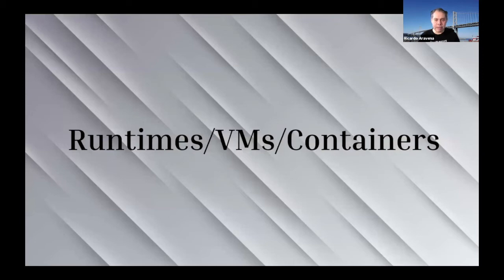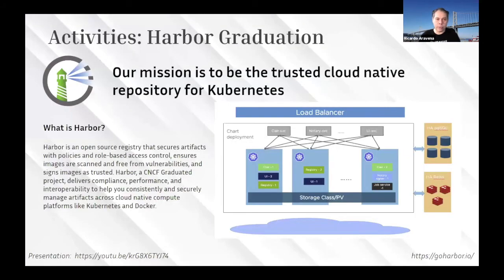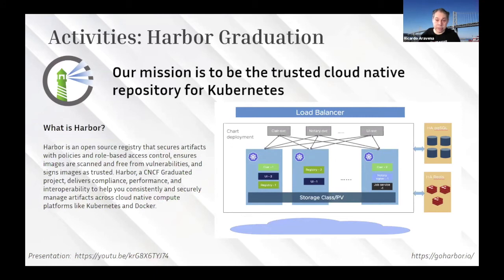In the runtime, VMs, and container space, there's Harbor, which graduated a few months ago. It's a container image registry — but not a regular single-process container registry. It's a multi-fault-tolerant container registry that allows you to store metadata in a chain system with high availability. It supports a caching system with Redis, stores data across multiple nodes using persistent volumes, and allows you to put your container registry behind a load balancer. It's a full-scale, very mature container registry project.